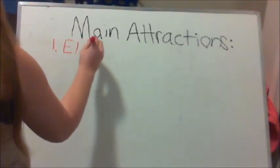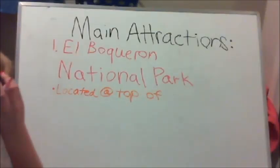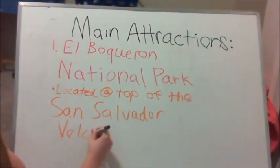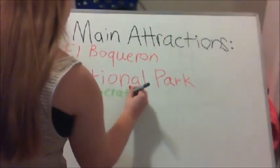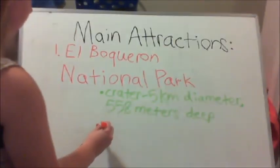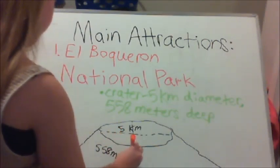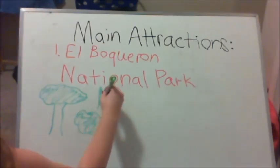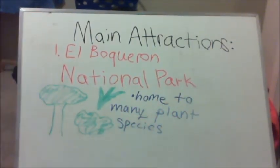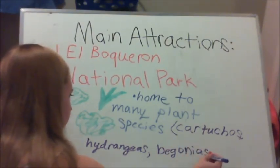The next thing is main attractions in El Salvador. The first one is El Boquerón National Park — I hope I pronounced that right. It is located on the top of the San Salvador volcano. The main attraction is a crater that is 5 kilometers in diameter and 558 meters deep, which sounds incredibly big. There are also plants found there, including cartuchos, hydrangeas, and begonias.